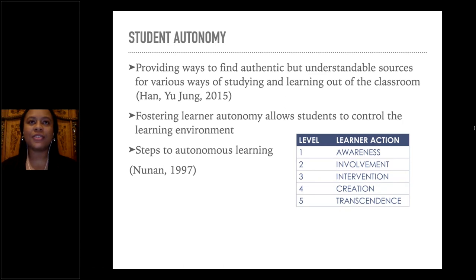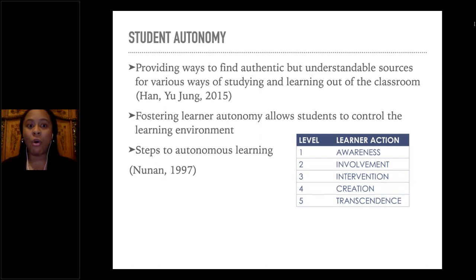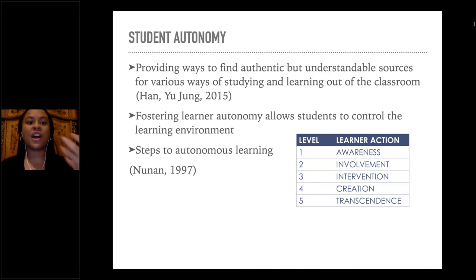Student autonomy, in my opinion, allows the student to control their own learning. It helps you create an authentic but understandable way for students to figure out what type of studying and learning works best for them. At the adult level, throughout the whole educational process, when students can actually learn themselves and focus more on how they learn, they're more in control. There are five steps to autonomous learning.